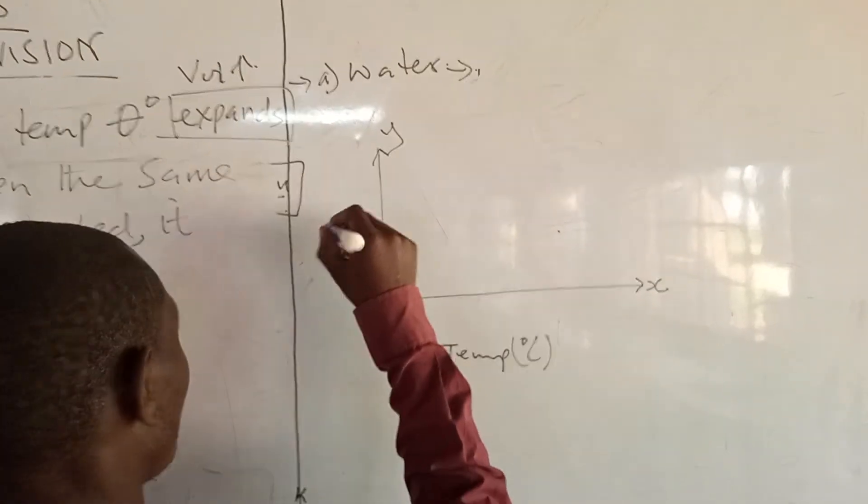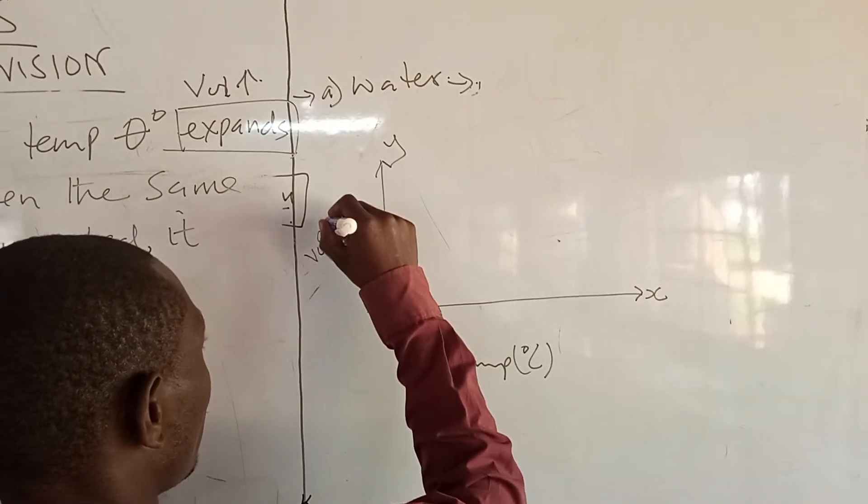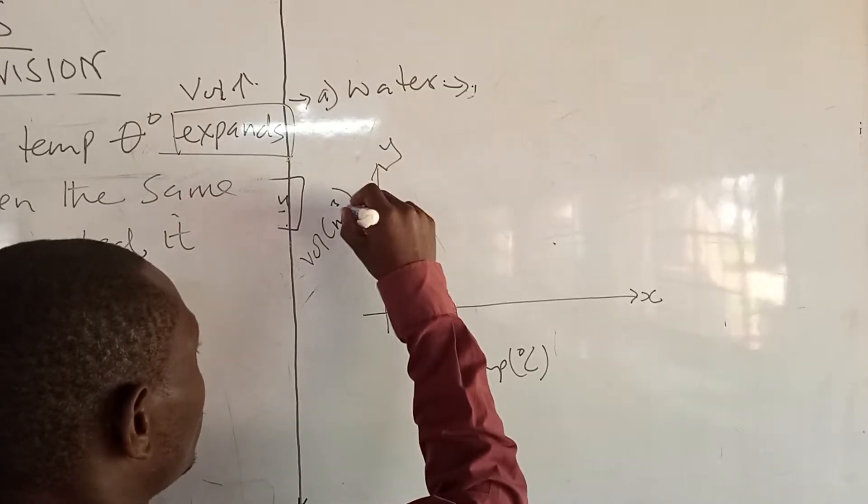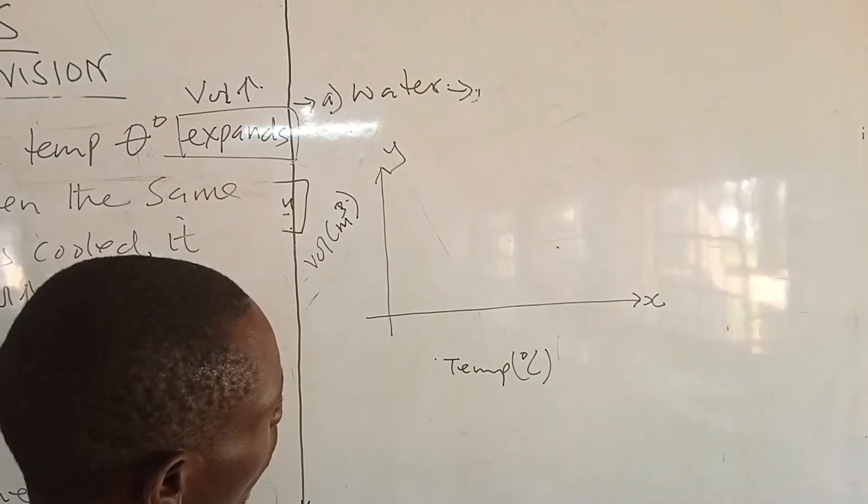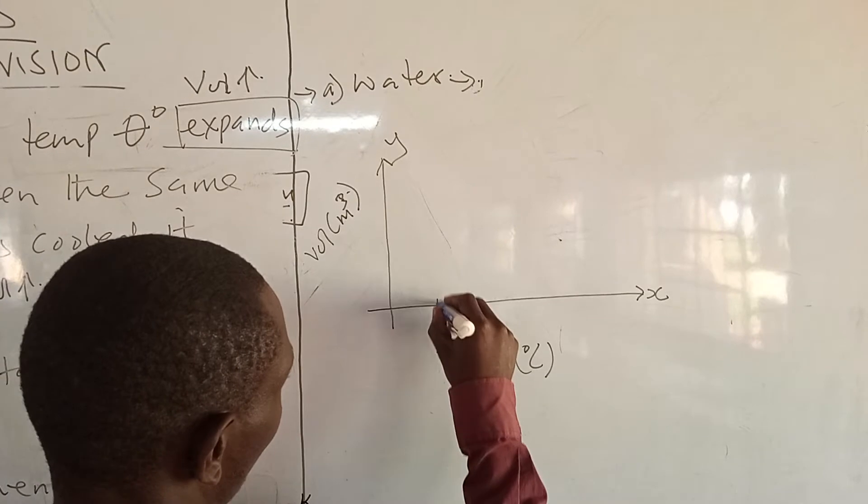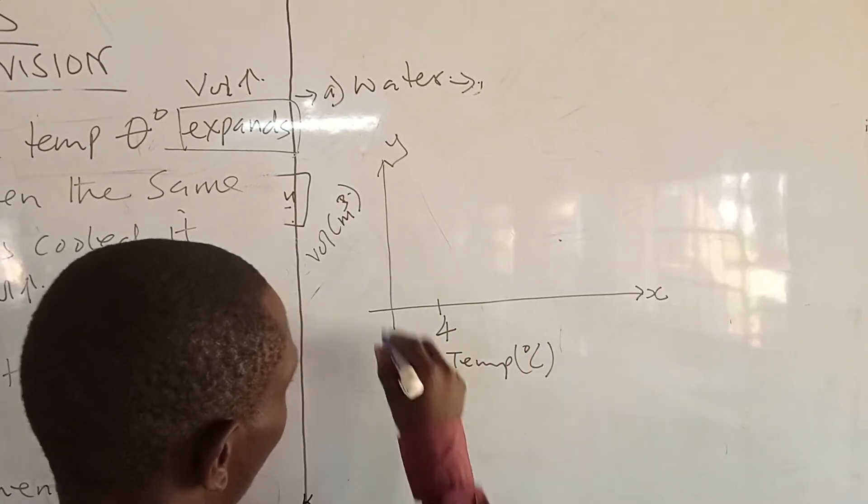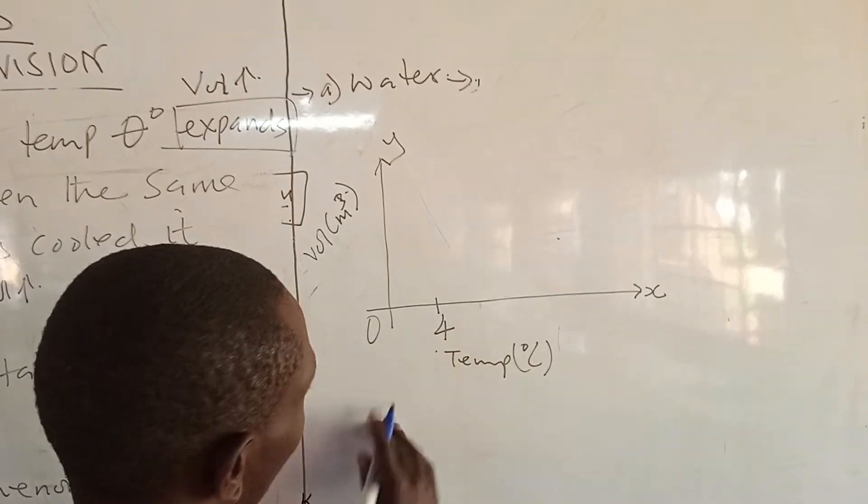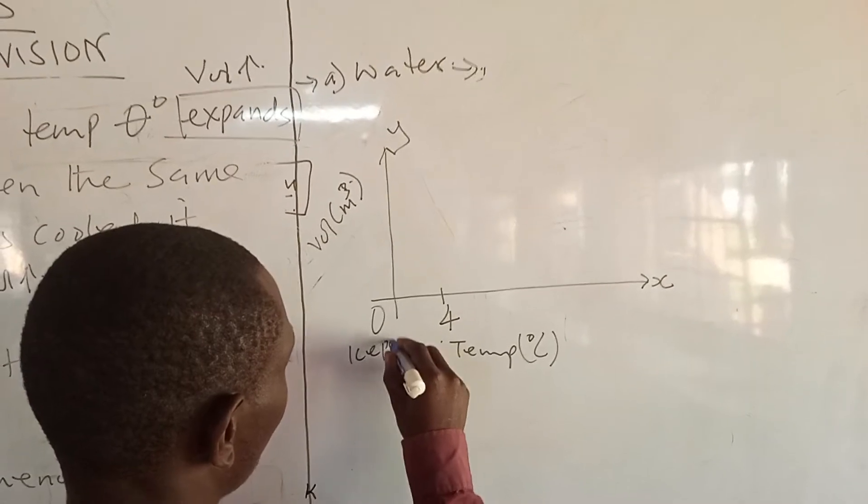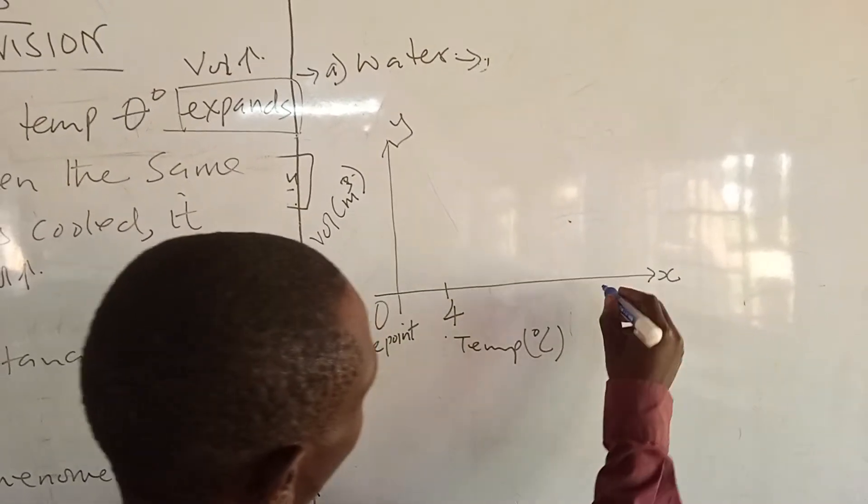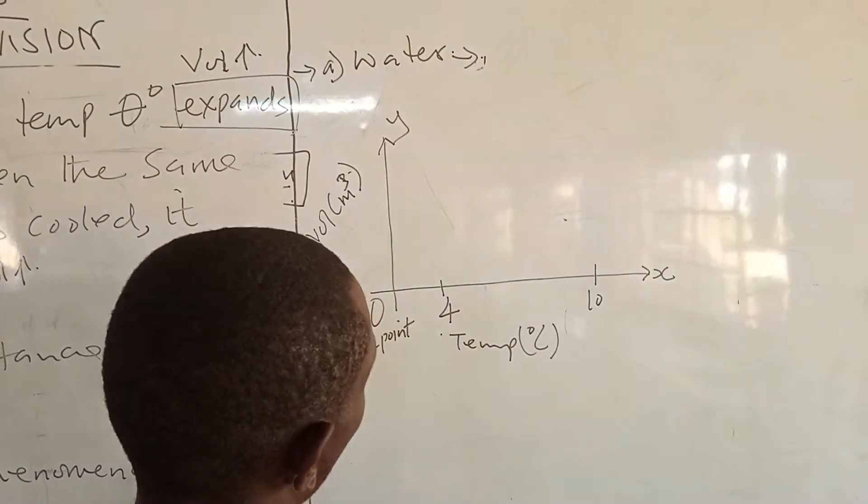Now, in my y-axis, I am going to have volume in cubic meter. If I have a temperature of 4 degrees and have a temperature of 0, remember this is the ice point, and then I have a higher temperature towards 10.